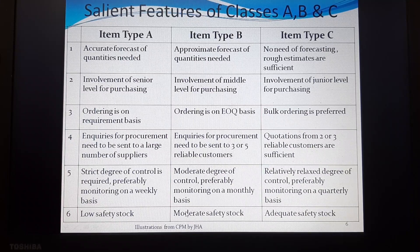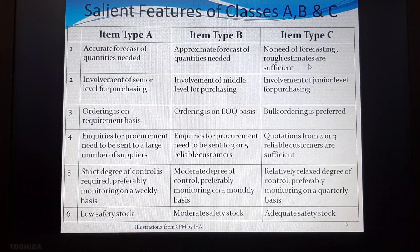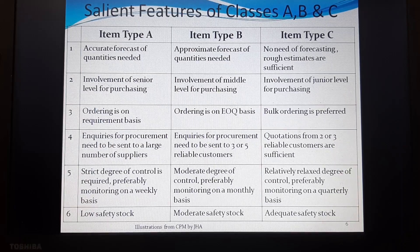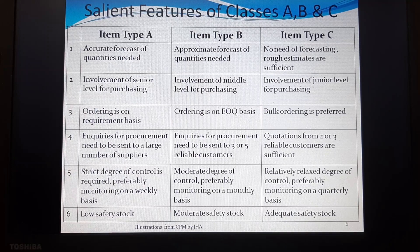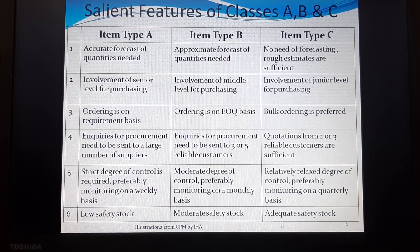For Class C items, which have the least value, no detailed forecasting is needed — a rough estimate is sufficient. Involvement of a junior level purchasing committee is acceptable. Bulk ordering is preferred and quotations from two to three reliable suppliers are sufficient. A relatively relaxed degree of control is used, with monitoring on a quarterly basis, and adequate stock can be maintained.